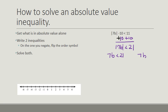7b is less than 21, and 7b is greater than negative 21. Notice that we negated the constant and then flipped the order symbol. So just divide both sides by 7, and we get b is less than 3. Then dividing by 7 again, we get b is greater than negative 3.